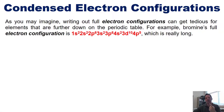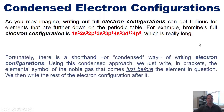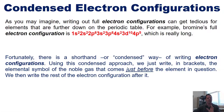Writing out the full electron configuration can get tedious for elements further down on the periodic table. For example, bromine's full electron configuration is 1s2 2s2 2p6 3s2 3p6 4s2 3d10 4p5, which is really long. Fortunately, there is a shorthand or condensed way of writing electron configurations.